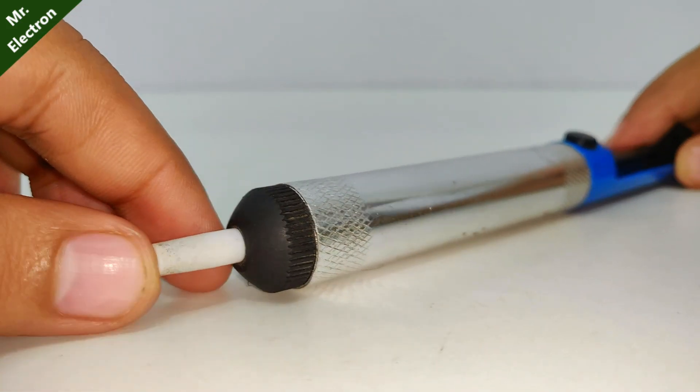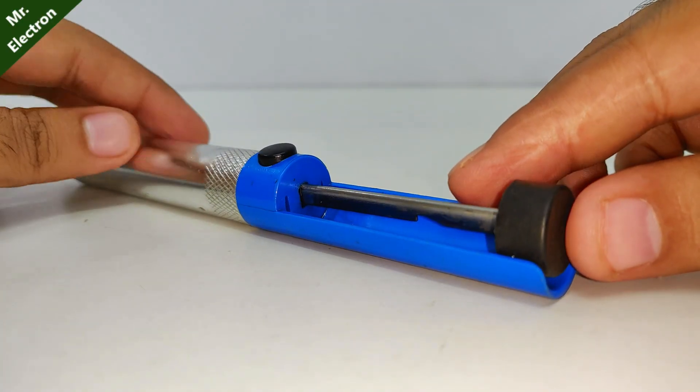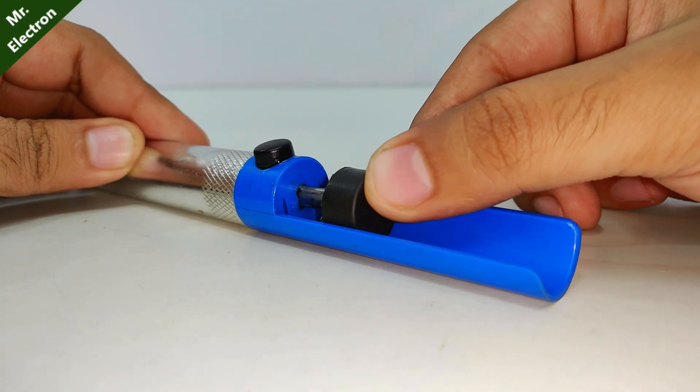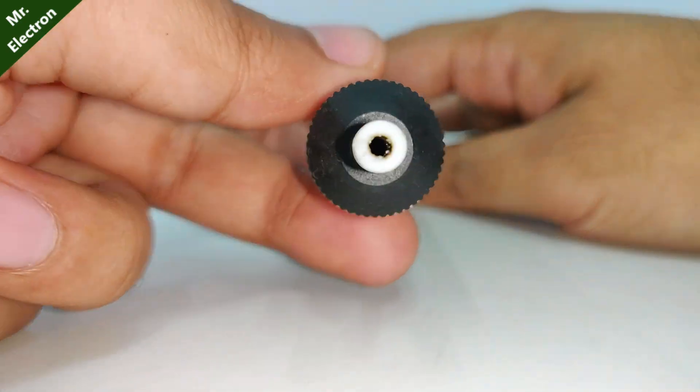Hi, this what you see is a manual desoldering pump. So today in this video I'm going to convert it into an electric pump.